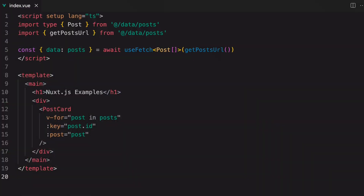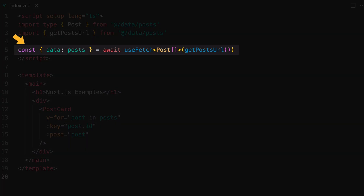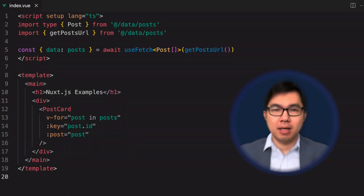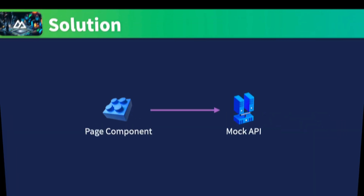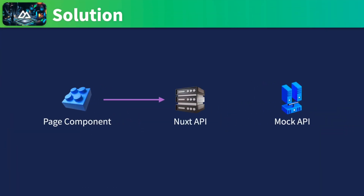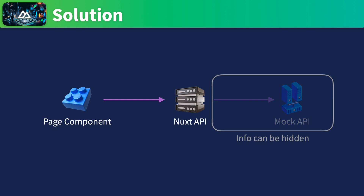In the previous lesson, we talked about the problem of fetching data from our API directly in the component — this could expose sensitive API information to the front end. One way to fix this is to create an internal API with Nuxt API routes, which will in turn fetch data from the original API. In our case, that's the mock API. That way, any information about the original API can still be hidden.